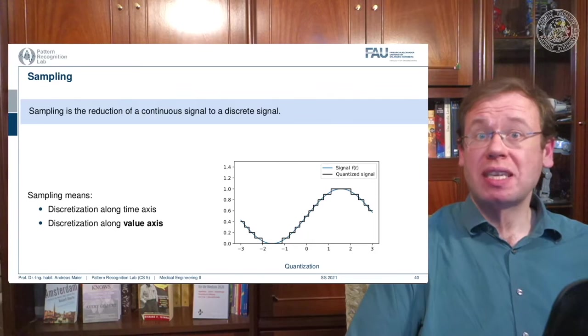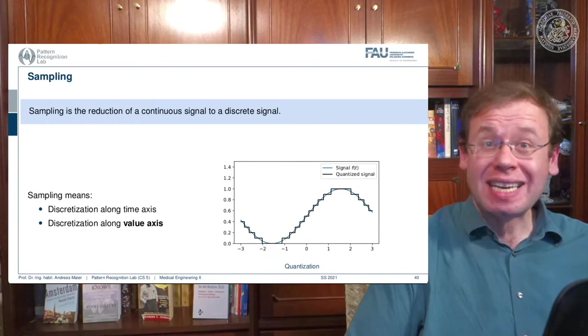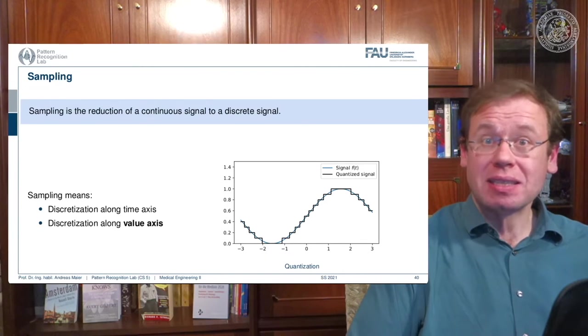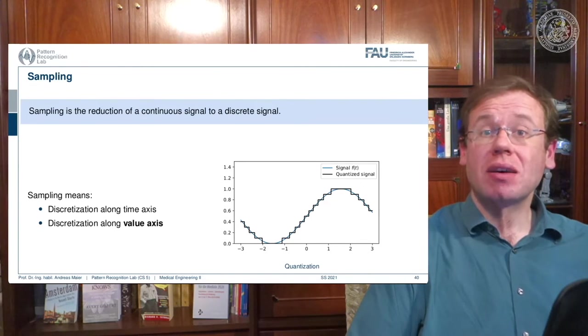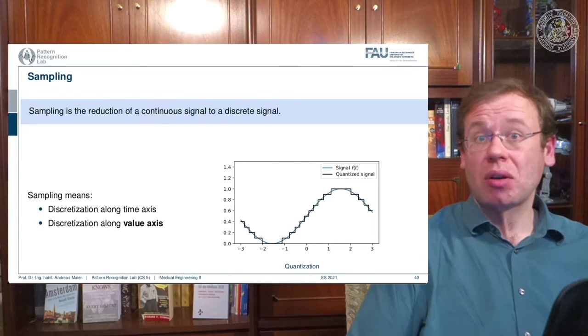Because if I have to sample twice as often, I need twice as much space. And I also need to process twice as much data. So this is really crucial to set these spacings here correctly, such that nothing really goes wrong. And things can go wrong quite a bit.